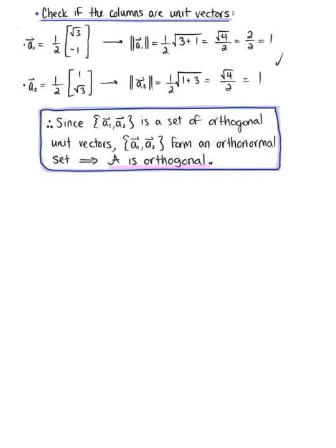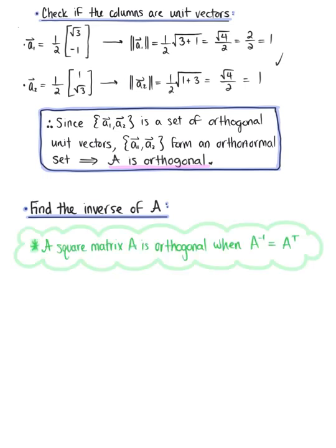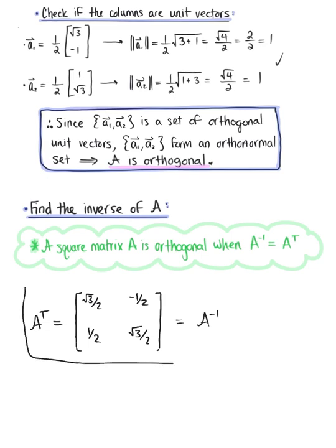Now that we have verified that matrix A is an orthogonal matrix, let's find the inverse. Recalling our theorem, a square matrix A is orthogonal when the inverse of A equals the transpose of A. So since we've already verified that matrix A is orthogonal, we can easily find the inverse using the transpose. We take the first column of matrix A and it becomes the first row of Aᵀ: (√3/2, −1/2). The second column becomes the second row: (1/2, √3/2). By our theorem, this transpose is the inverse of matrix A — our final answer.